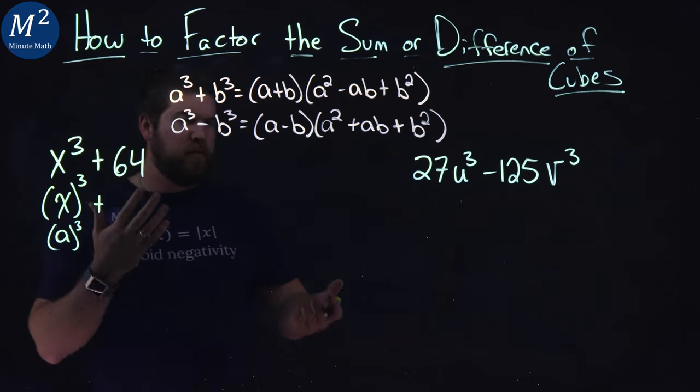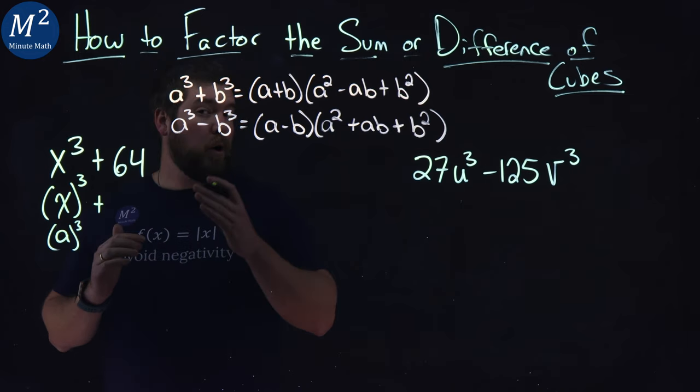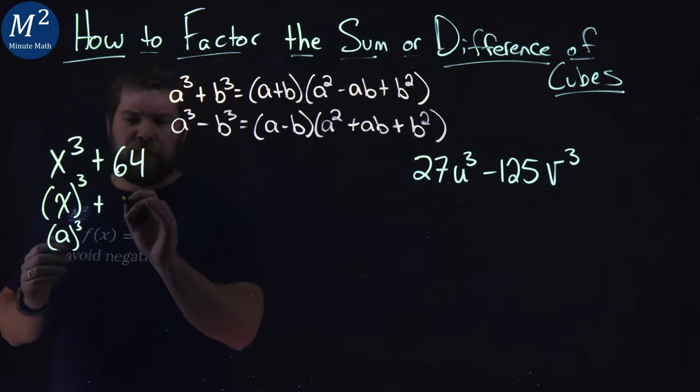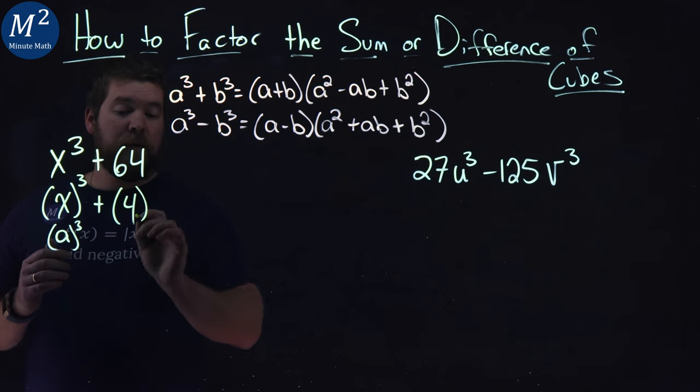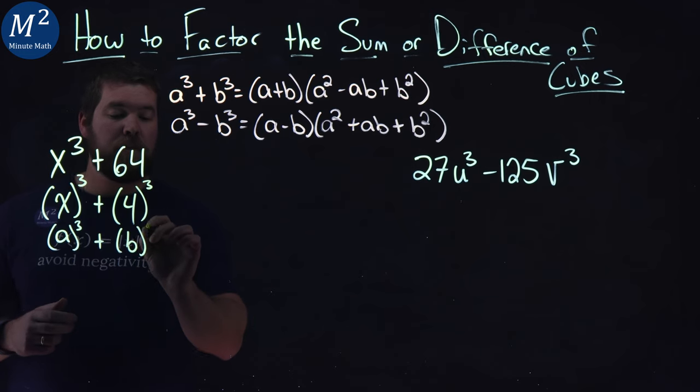What about 64? Can we rewrite that to be a value cubed? Well if you don't know 4 cubed is 64. So we can rewrite this to be 4 cubed and now we have our b value all cubed.